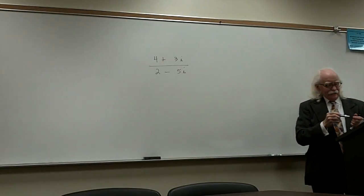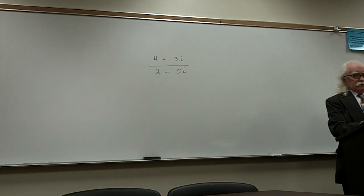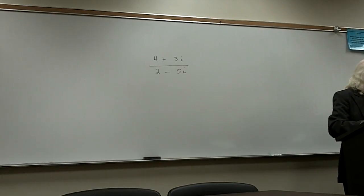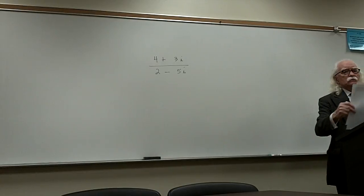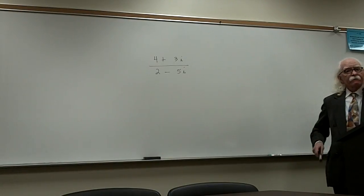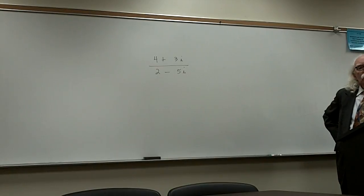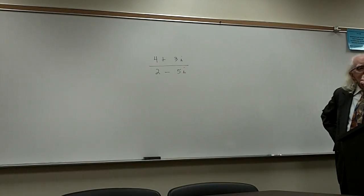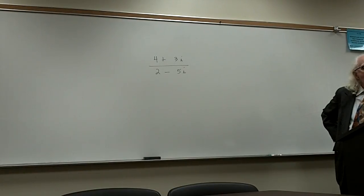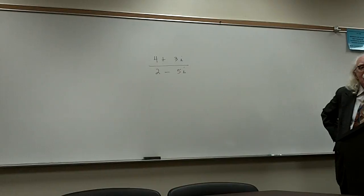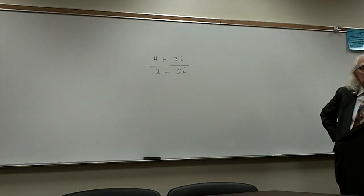What about dividing two complex numbers together? The answer is going to be negative 7 over 29 plus 26 over 29 i.